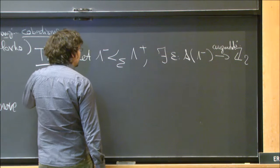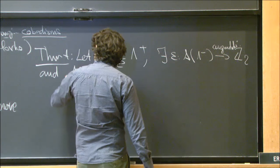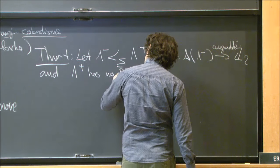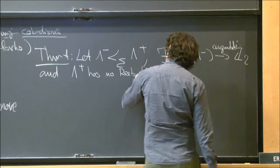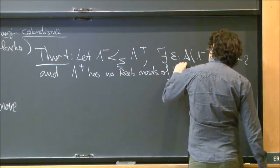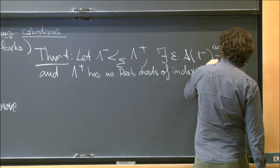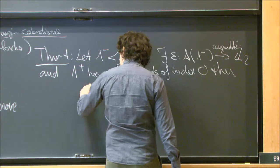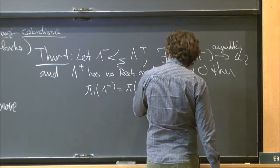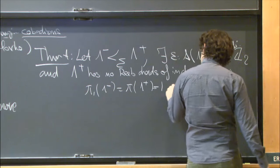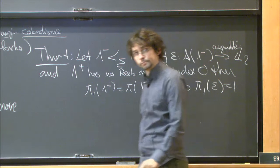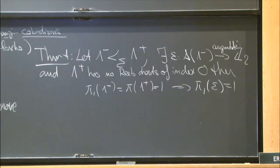Third condition: λ⁺ has no Reeb chords of index zero. Then the following is true: if I assume that the ends of the cobordism are simply connected, then the whole cobordism itself is simply connected.